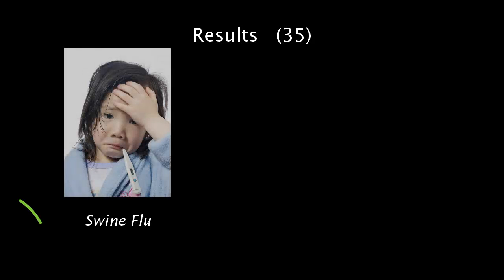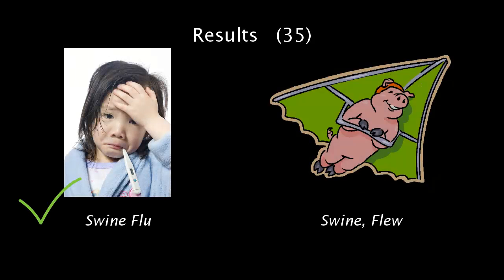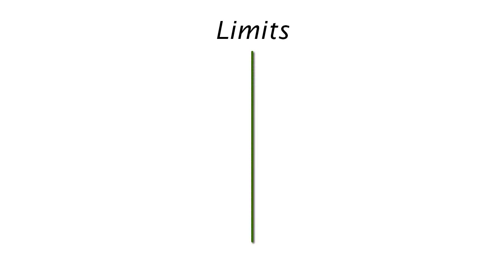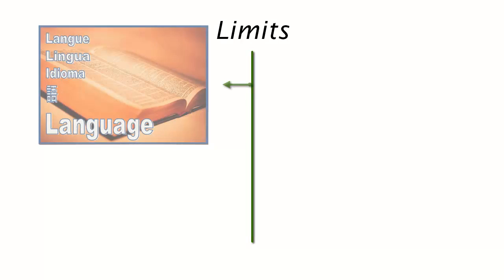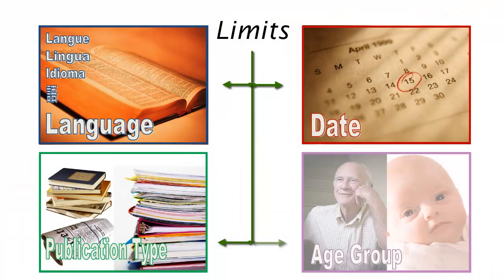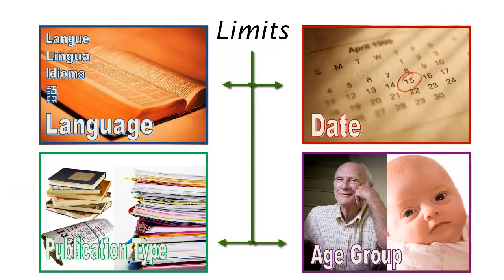Chances are you'll find some great results mixed in with others that are not so relevant. At this point, it might be helpful to apply limits to your search. Limits are essentially specialized subject headings that will limit your result list based on a number of factors, including language, date, publication type, age group, and more.